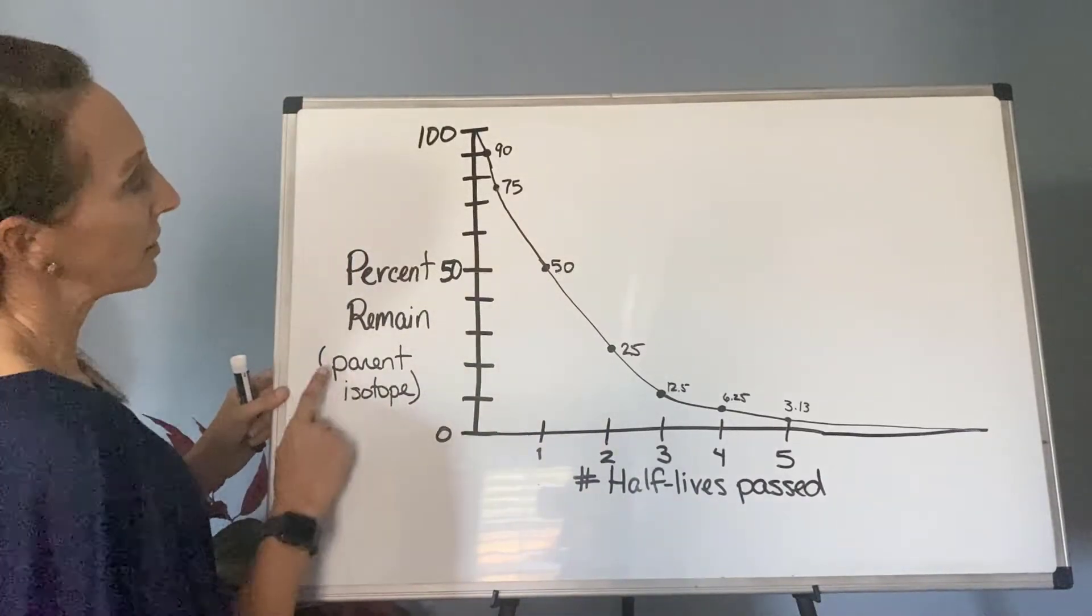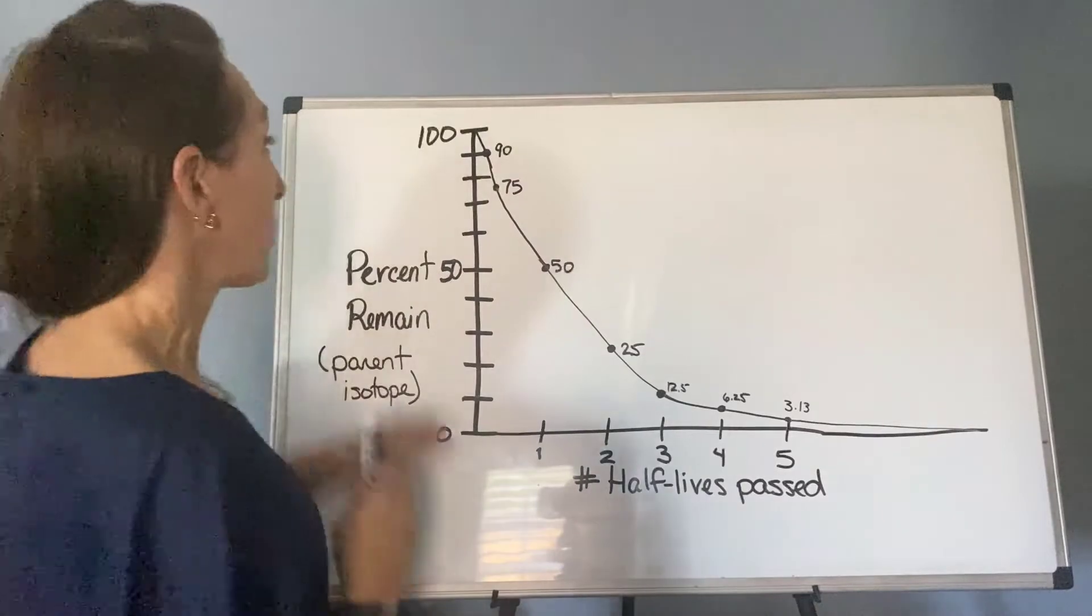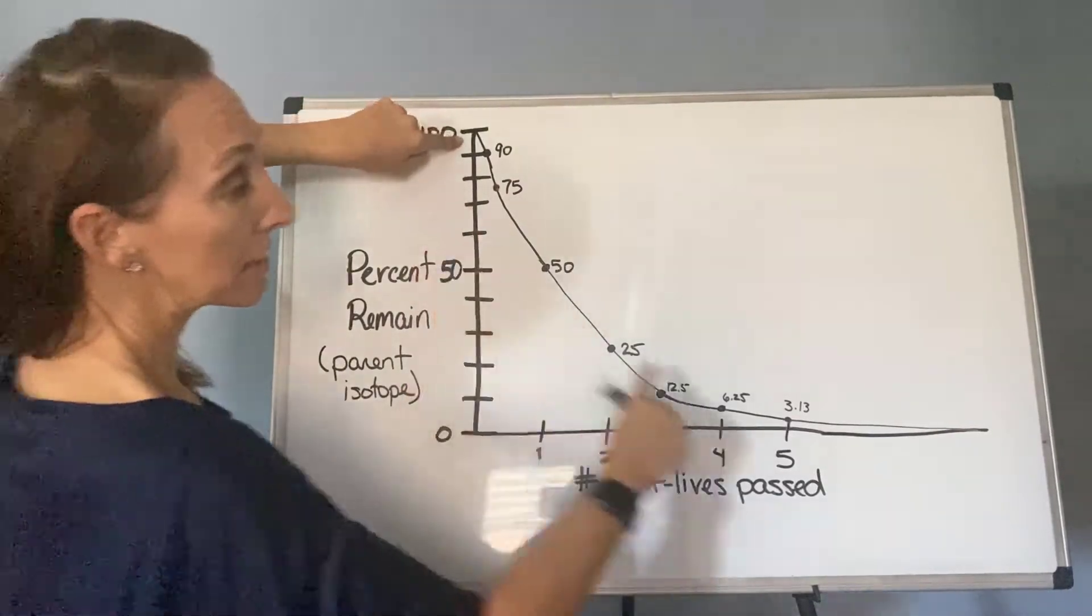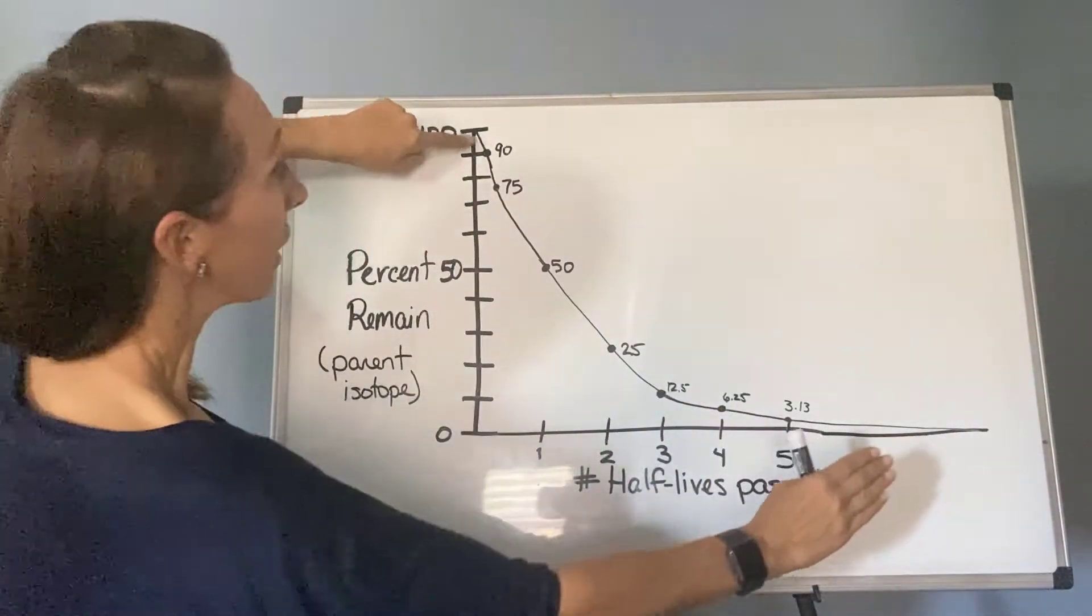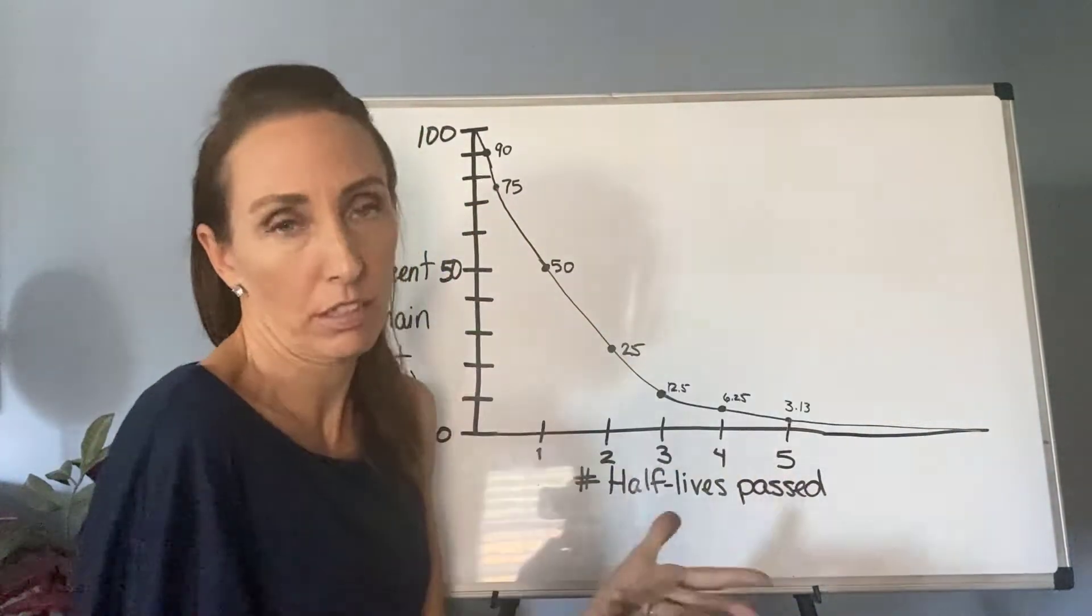And then this is going to be the percent remaining of the parent isotope. So you start out with 100%, and as time passes this way, it decreases in the amount of parent isotope until you essentially go to zero.